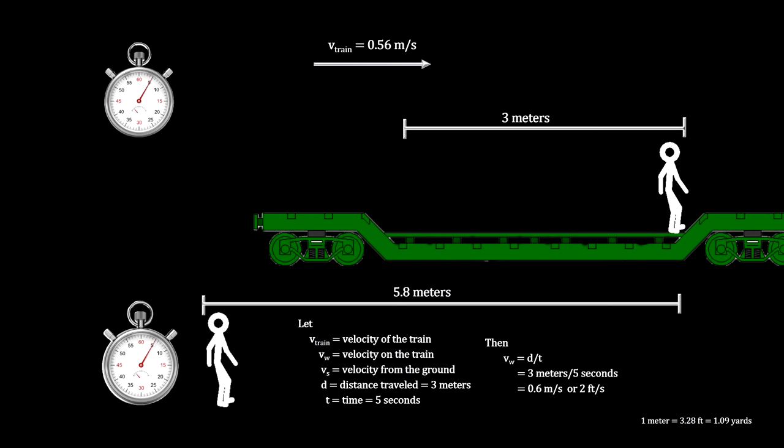Now using the same process, he just measures the length of the line and divides by the time. In this example, the rider went 5.8 meters in the same 5 seconds, for a speed of 1.16 meters per second.